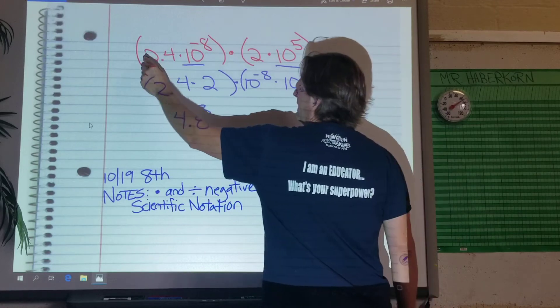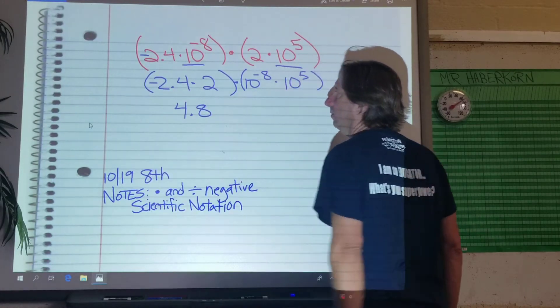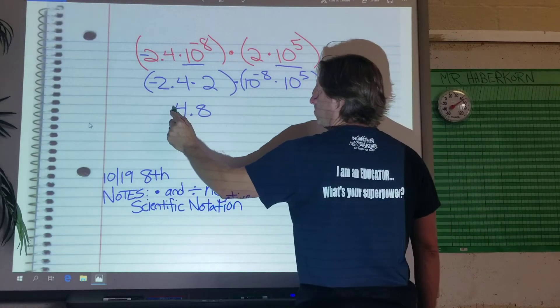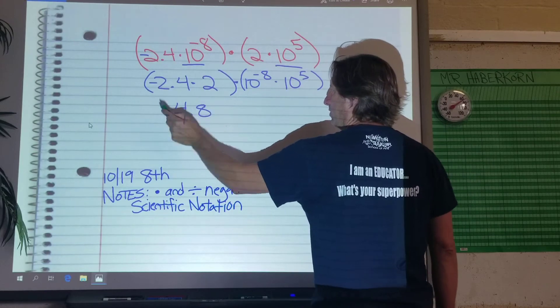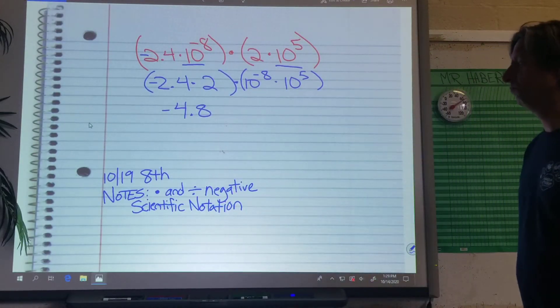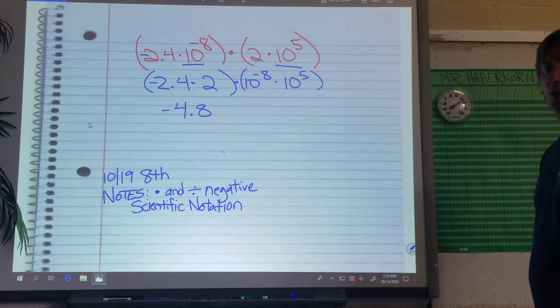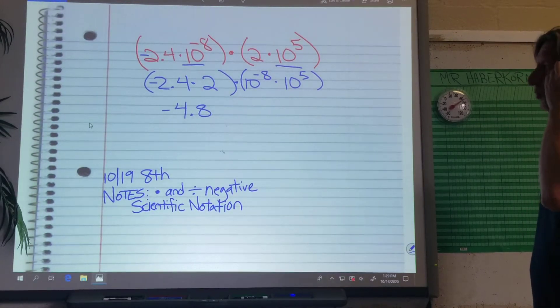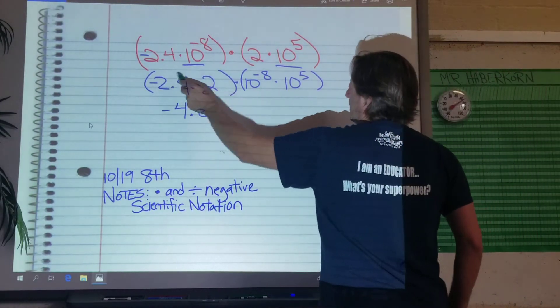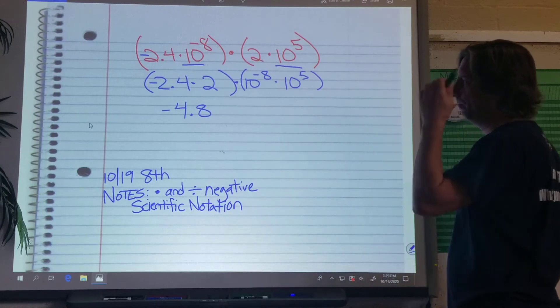We can also have a negative. Let's put a negative here too, just for the fun of it. 2.4 times 2, negative times a positive is a negative, right? There you go, negative 4.8. So not a big deal, just got to remember those rules, right? A negative times a positive is a negative, okay?